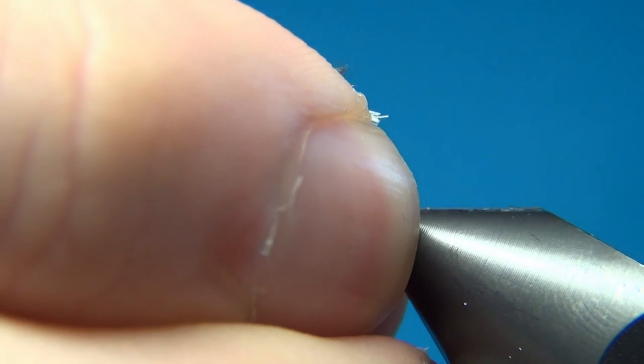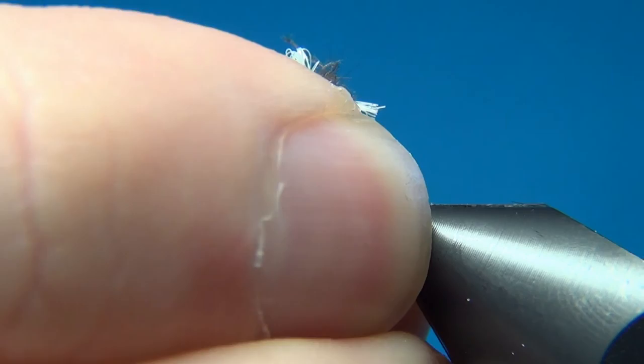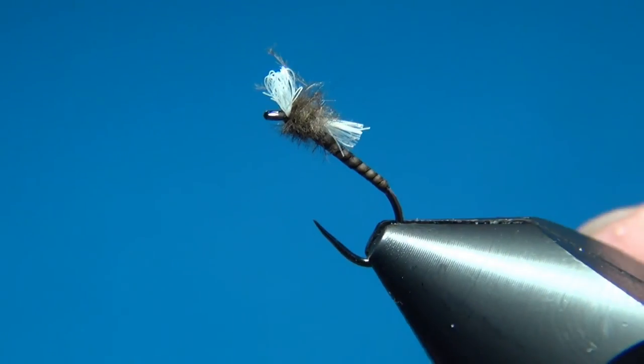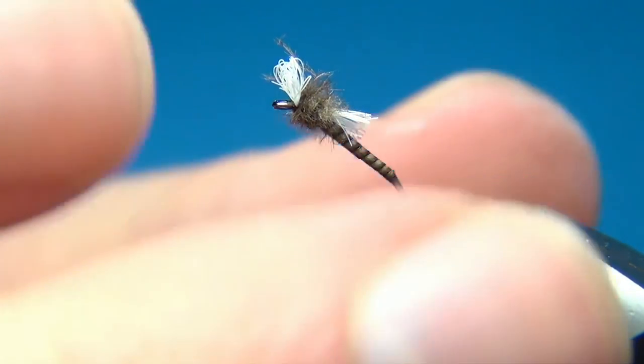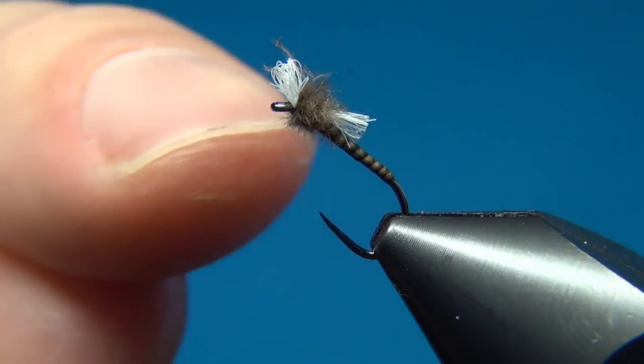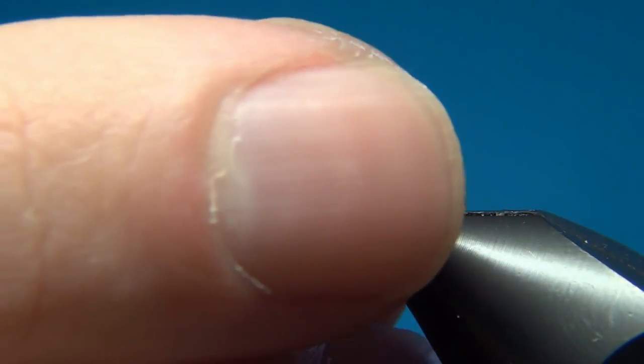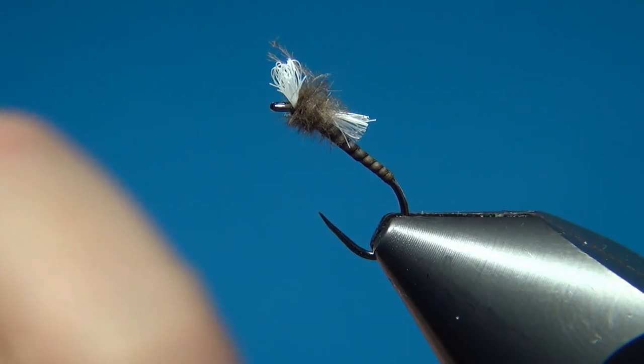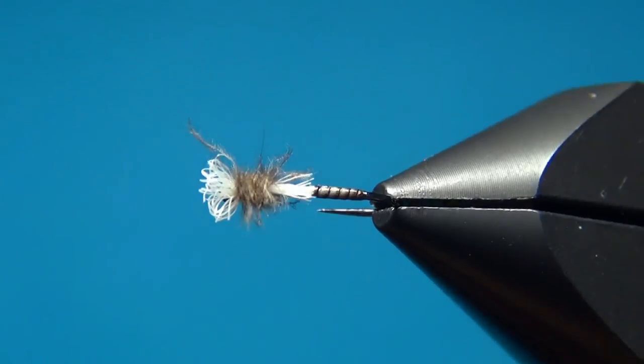So this fly will then, once it's in the water, it will stand about like this. With this part floating over the surface and this will be just underneath. And there we have the midge pupa.